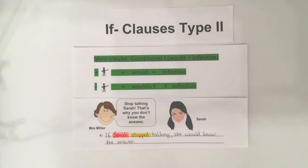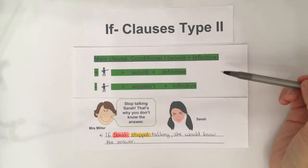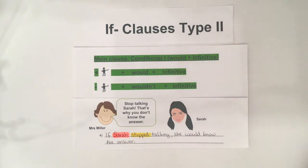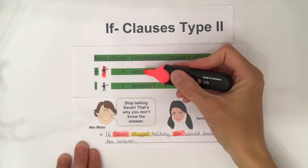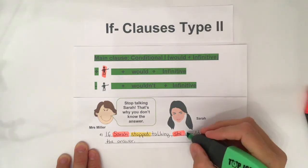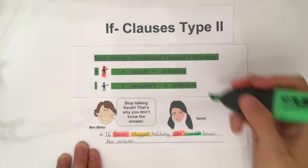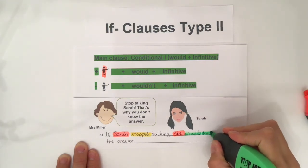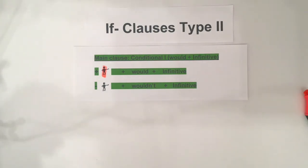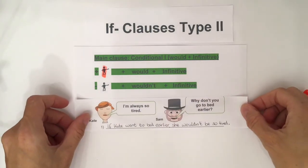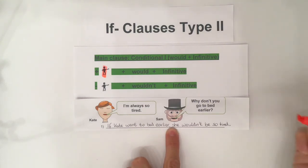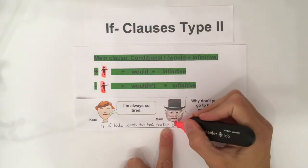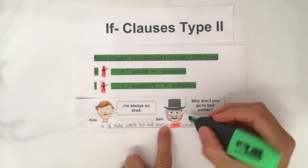In the main clause — the second part of our sentence — we use the conditional. For a positive sentence, we again have the person, then 'would', plus the infinitive form. It's also possible to form negative sentences: in that case, we have the person plus 'wouldn't' plus the infinitive form.